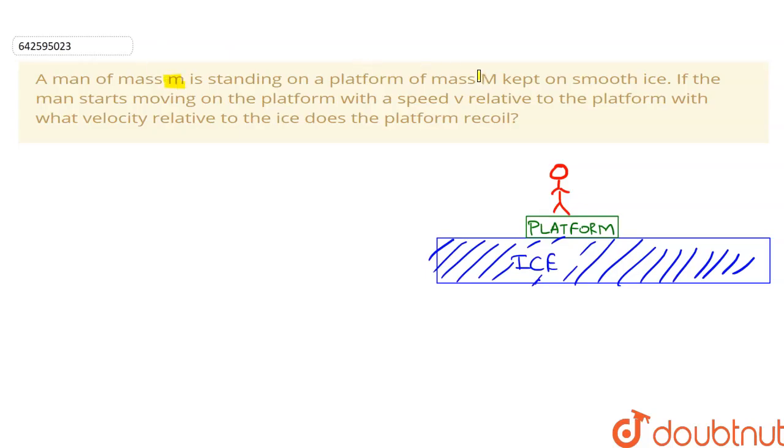is standing on a platform of mass M kept on smooth ice. If the man starts moving on the platform with a speed v relative to the platform, with what velocity relative to the ice does the platform recoil?